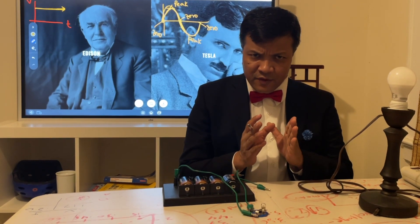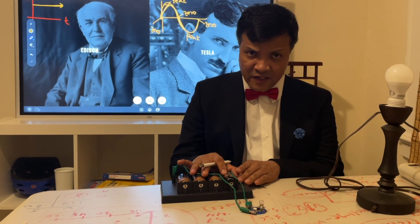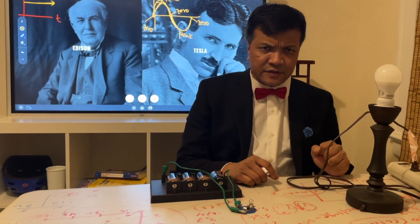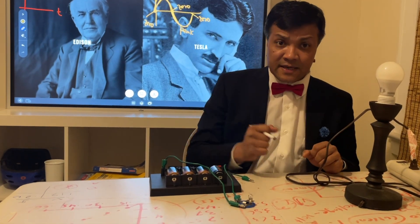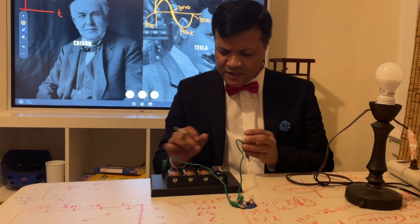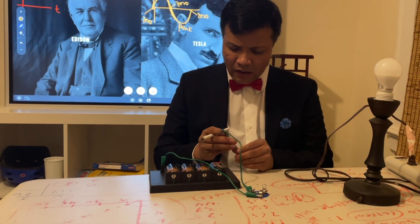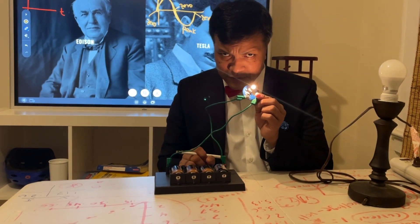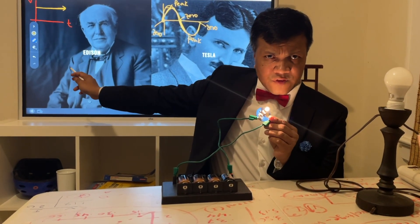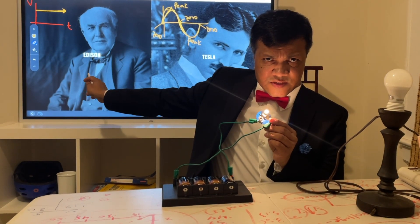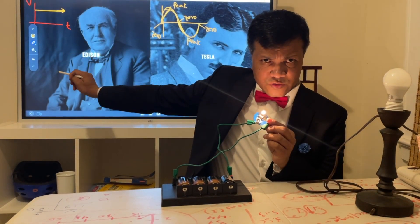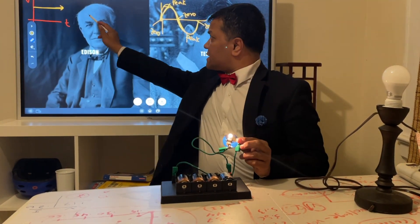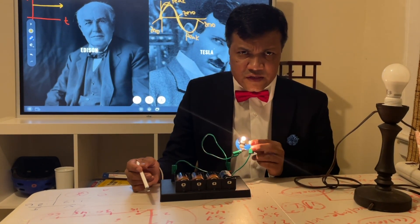In this lesson I'm going to help you understand the difference between DC current, invented by Thomas Alva Edison, and AC current, invented by Nikola Tesla. DC current, as you see connected with the battery, gives us constant current, which you can illustrate by the graph. The x-axis is time, the y-axis is voltage, and as you see, the current is constant.